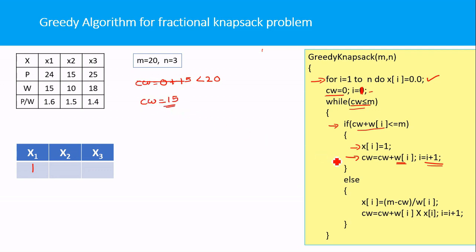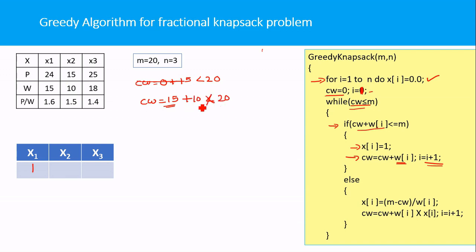We check again whether the current weight is less than the knapsack capacity — yes, it is. Now I check: if I add the second item completely, will the current weight remain less than or equal to the capacity? The weight of the second item is 10, so 15 plus 10 equals 25, which is not less than 20. So we cannot add the second item completely and go to the else part.